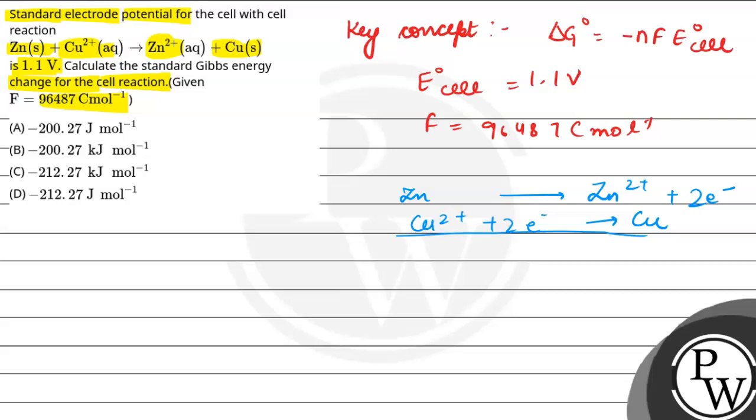Overall, if we write the reaction, that will be Zn + Cu²⁺ forms Zn²⁺ plus Cu. So in this case, we have two electrons transferred if we write the overall reaction.